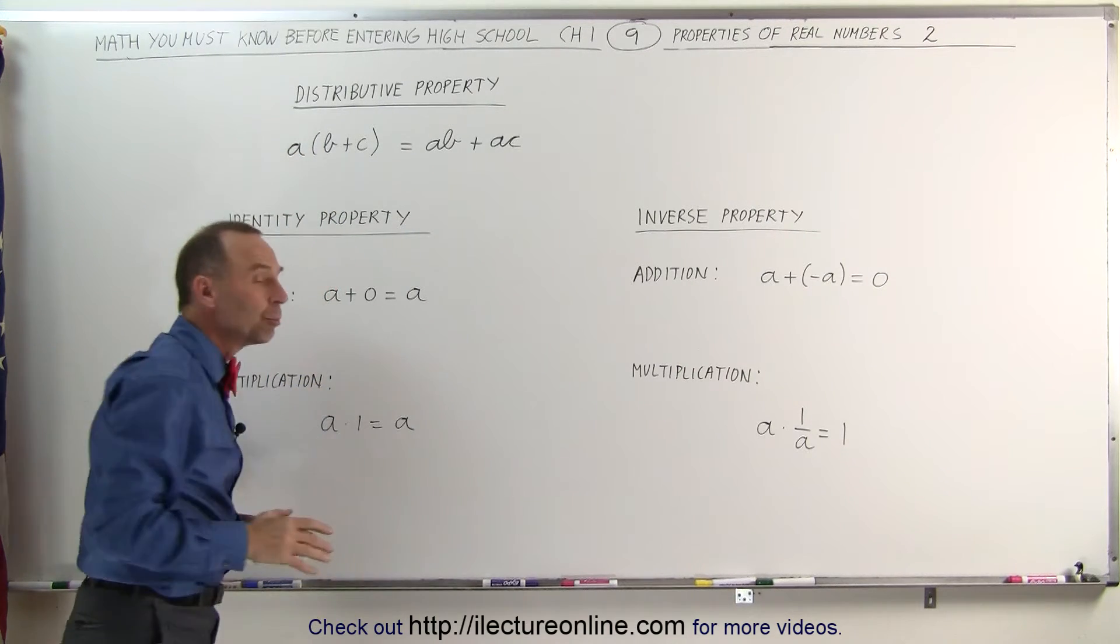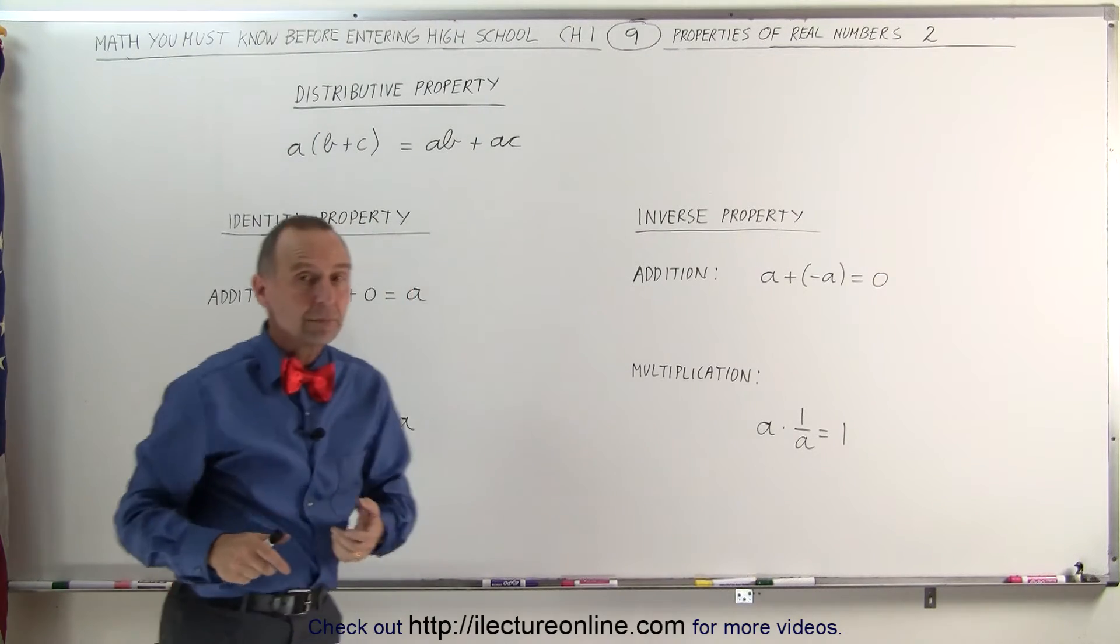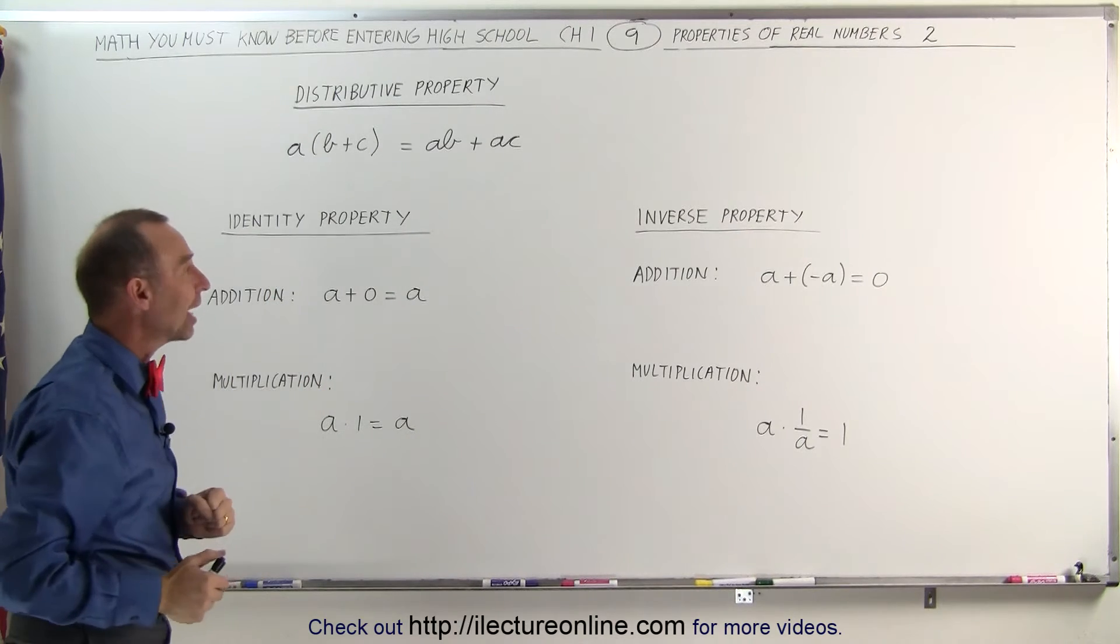Then we have a couple more properties. One is called the identity property and one is called the inverse property. We have one for addition and one for multiplication in each case.